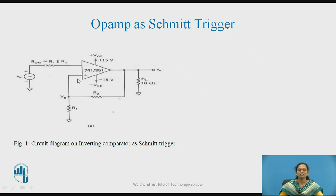V1 is nothing but the voltage at the non-inverting terminal of the OPAMP, which can be calculated as R1 divided by (R1 + R2) into V0. As we are using positive feedback, we can obtain the output voltage varying between +Vsat and −Vsat only.